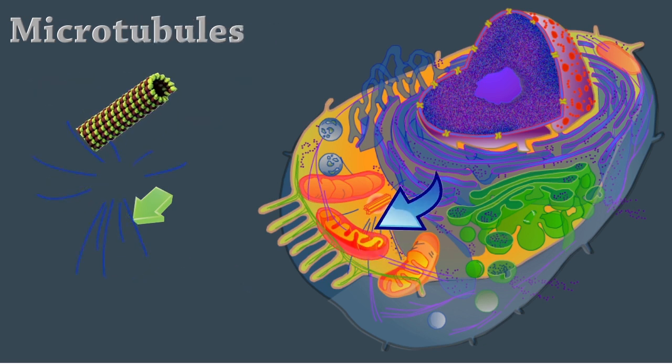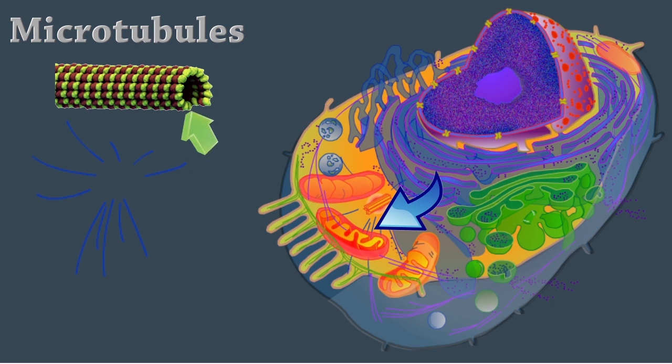Microtubules are cylindrical structures made of tubulin proteins. They support the cell and give it shape. They're involved in intracellular and cellular movements and form centrioles.